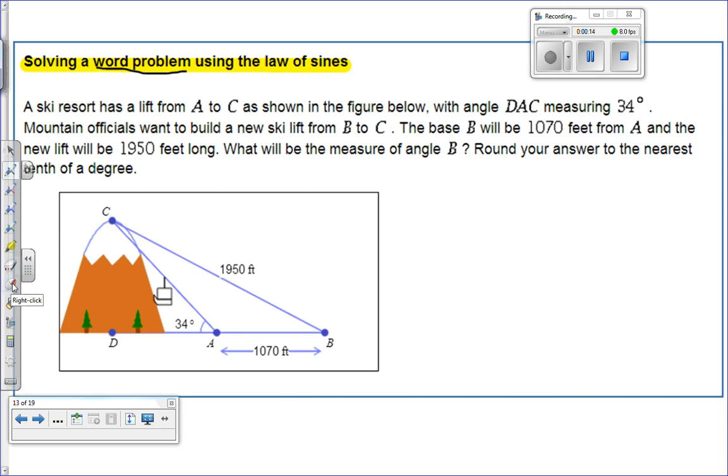Okay, so let's think about what we know and what we don't know here. You've got a little ski resort. You can see the lift coming up. Nice drawing for you, so that kind of helps you out big time. But what we're actually looking for in this problem is what will that measure of angle B be? Okay, so here is angle B. We want to know what that is.